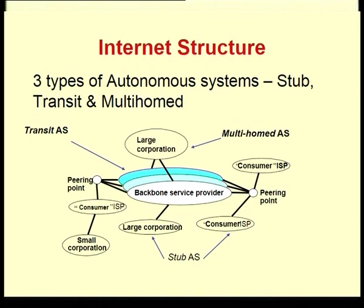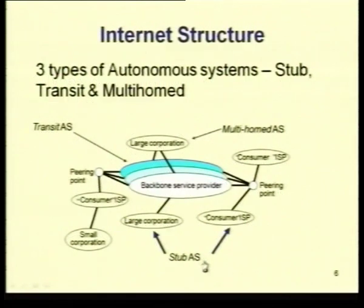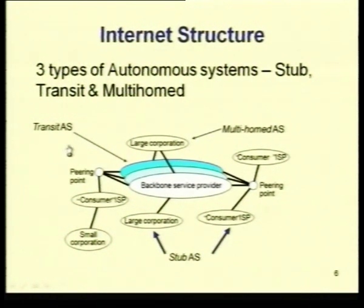Autonomous systems are of three different types: a stub autonomous system, a transit autonomous system, and a multi-homed autonomous system. A multi-homed autonomous system connects to different autonomous systems. A stub autonomous system connects at only one point to another autonomous system — it is not connected to two or more autonomous systems. A transit AS is connected to more than one autonomous system and agrees to carry traffic meant for some other autonomous system.